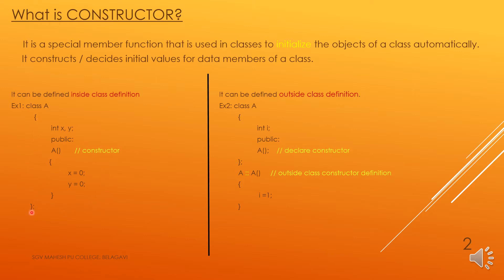Now if I want to define the same member function outside the class, I declare the constructor inside class A and then define it outside using the scope resolution operator. The scope resolution operator is used when you want to access any members outside the class. So I define the constructor outside and initialize the value. This is a constructor defined outside the class.